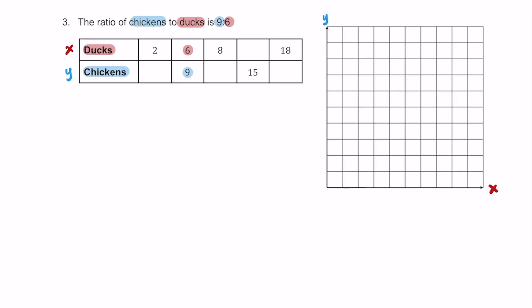Let's use the original ratio of 6 to 9 — ducks on top, chickens on bottom — to figure out some other information. Note: the problem says 9 to 6 because chickens was written first, but with ducks on x we put ducks first. We know there are 2 ducks here, so we put 2 on top. How does 6 become 2? Divide by 3. So 9 divided by 3 is 3 chickens — it's 3 chickens for every 2 ducks.